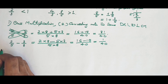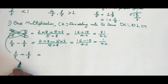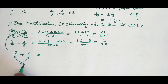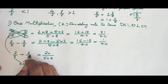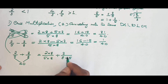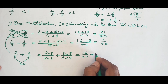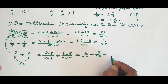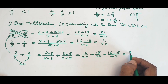Now I'll simplify the same problem using the same-denominator method. For two over five and three over eight, 40 is a common multiple of 5 and 8. Multiply the numerator and denominator of the first fraction by 8 to get 16 over 40, and multiply the second by 5 to get 15 over 40. With the same denominator, combine the numerators: 16 plus 15 over 40 equals 31 over 40.